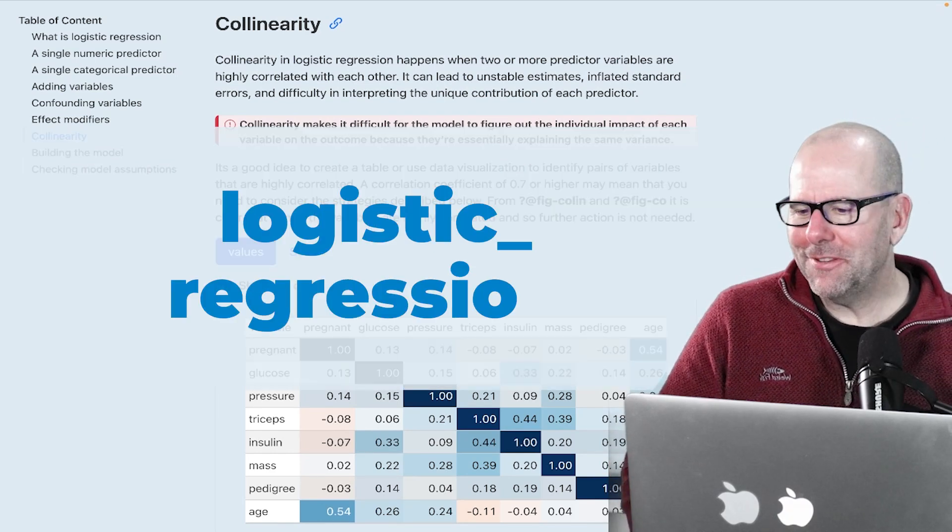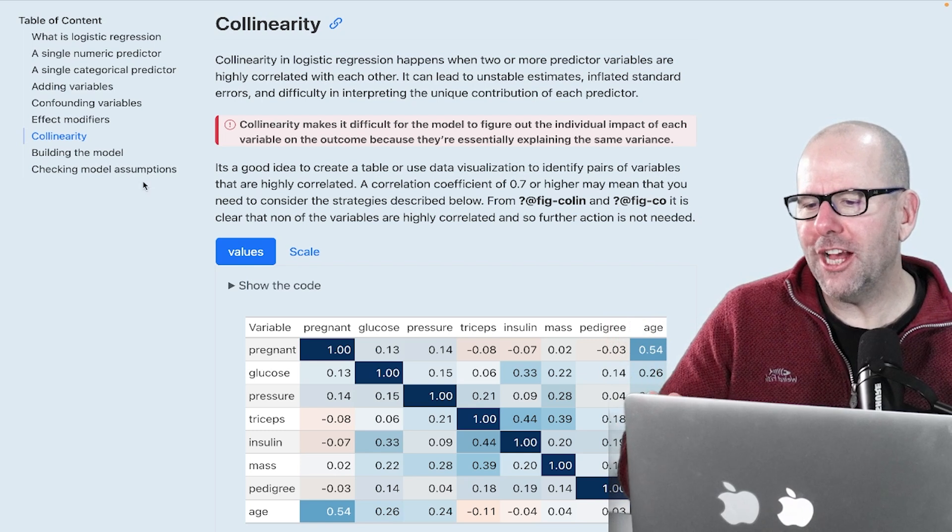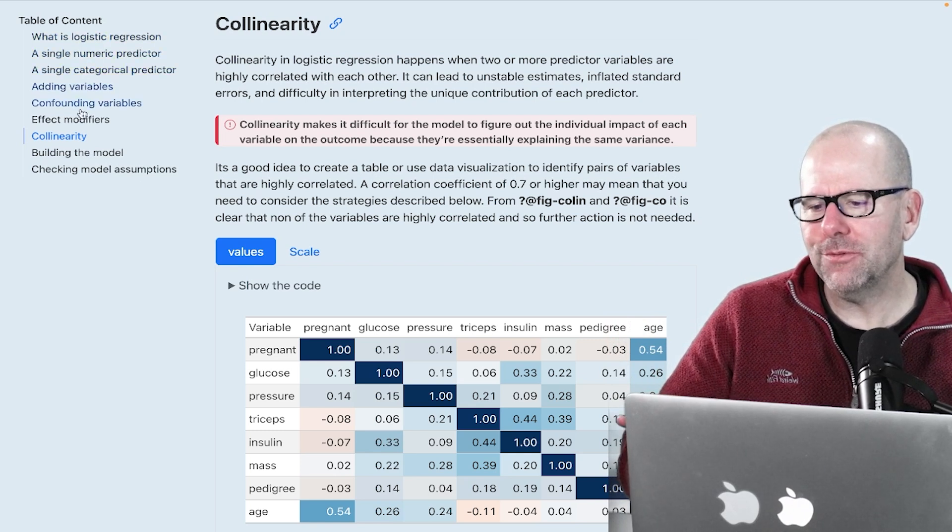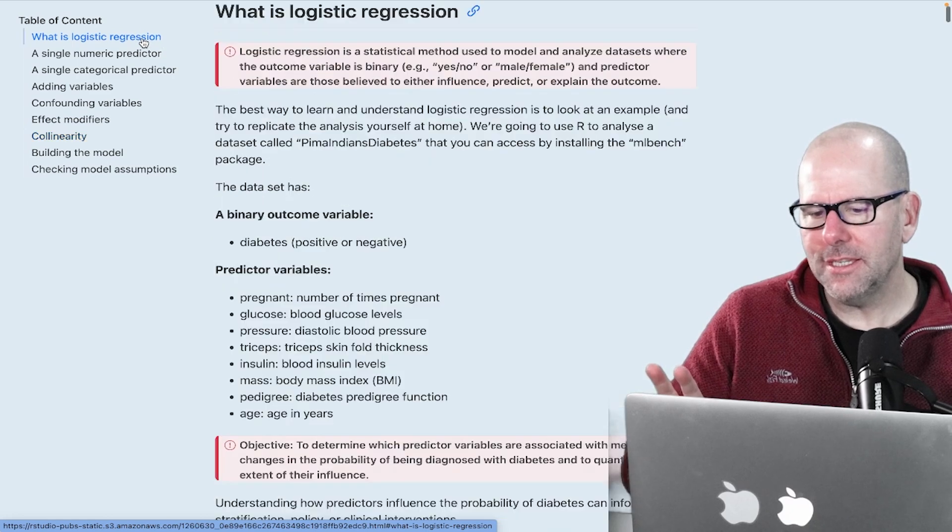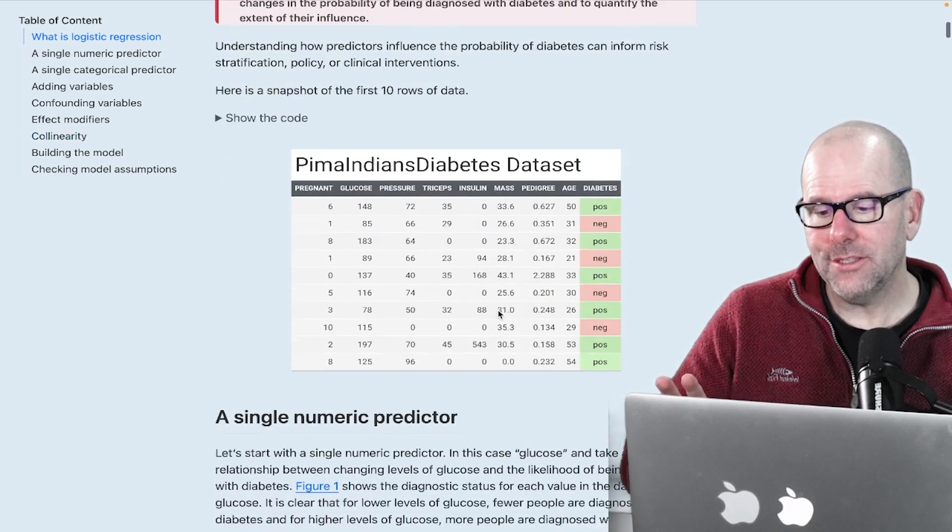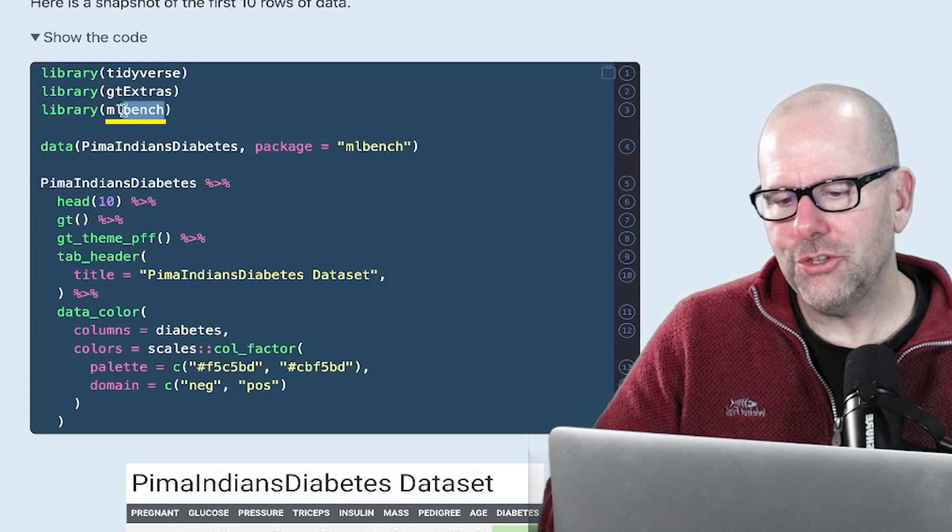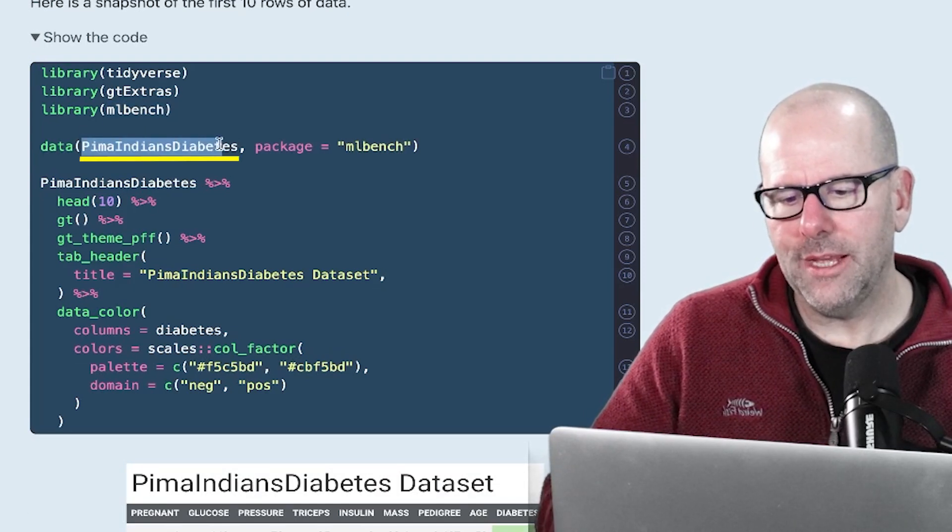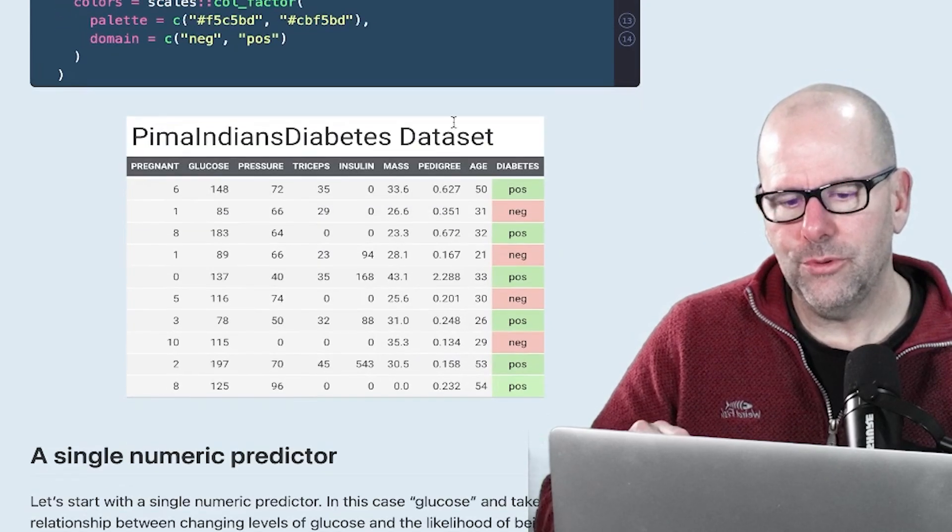Welcome back. We're talking about logistic regression. This is episode five or six, I can't remember which, but we are working our way through all of the aspects of logistic regression. Just so you know, we are looking at a dataset that you have access to. If you're working in R, install MLBench as a package, call it with the library, and you've got this data here. All of the data we're looking at refers to that.